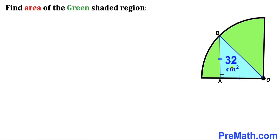In this video we have got this blue triangle OAB inscribed in a quarter circle, as you can see in this diagram, such that the area of this blue triangle is 32 cm². Moreover, this blue triangle is not only a right triangle but also an isosceles triangle, and now we are going to calculate the area of this green shaded region.